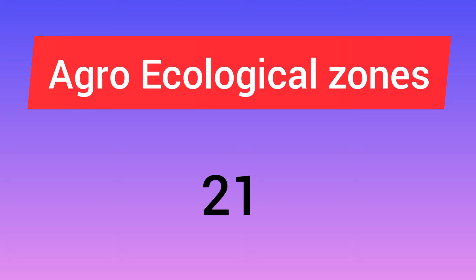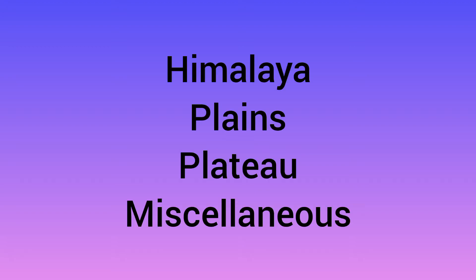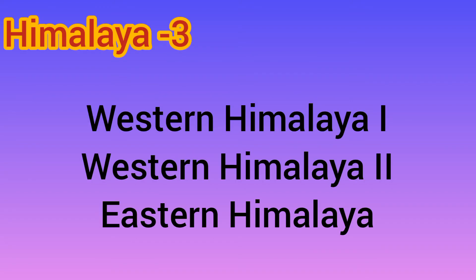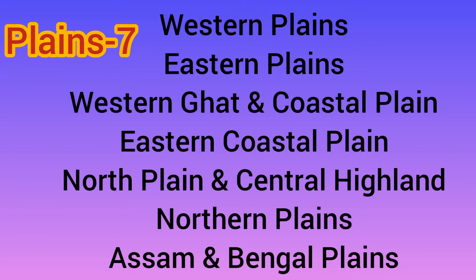We can't learn them all in one go, so let's break it into four parts: first Himalayas, then Plains, then Plateau, and Miscellaneous. Under the Himalayas there are three zones: Western Himalayan 1, Western Himalayan 2, and Eastern Himalayas. Now the Plains — there are seven: Western Plains, Eastern Plains, Western Ghats and Coastal Plains, Eastern Coastal Plains.